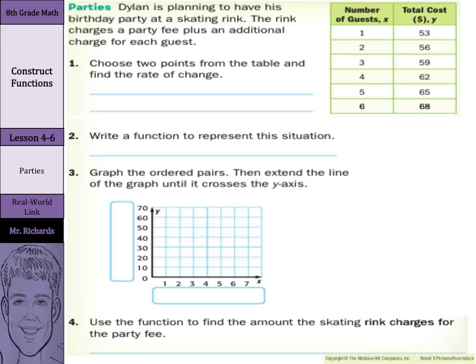First, choose two points from the table and find the rate of change. Let's pick 3, 59 and 5, 65. To find the rate of change we can take 65 minus 59 and subtract 5 minus 3. Remember y2 minus y1 over x2 minus x1. That simplifies into 6 over 2 which is 3. So the rate of change is 3.